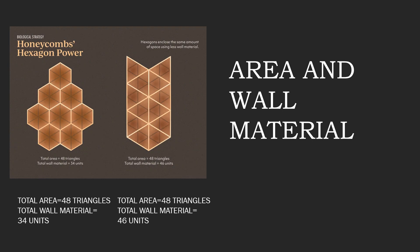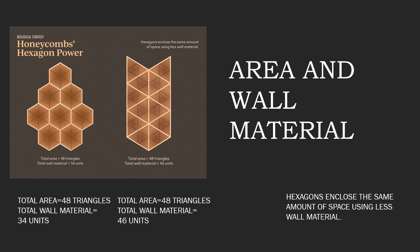Area and wall material. The total area is 48 triangles and the total wall material is 34 units. The total area is still 48 triangles, but the total wall material is 46 units. The hexagons enclose the same amount of space using less wall material.